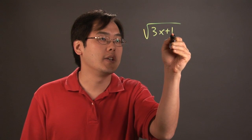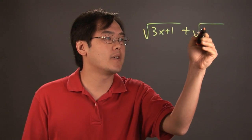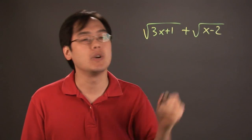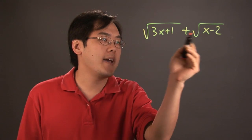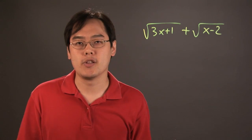Suppose you have the square root of 3x plus 1, and you want to add it with the square root of x minus 2. As tempting as it is to want to add the interior terms and just call it another radical,